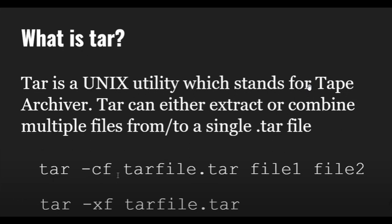So what is the format? What is the command used to perform the same? The first command is tar -cf. So 'c' means compression. What this command actually does: tar -cf tarfile.tar file1 file2 — it will take file1 and file2 as input and compress them into tarfile.tar.